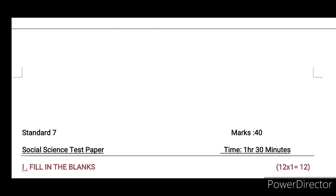Hello friends, welcome to the class. We are going to take a look at the 7th standard social science test paper. Unit 3: Resistance and the First War of Independence. Total marks: 40, time: 1 hour 30 minutes.